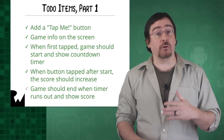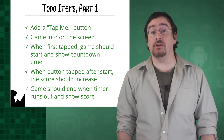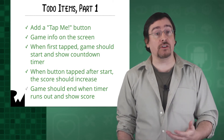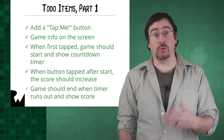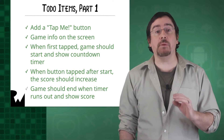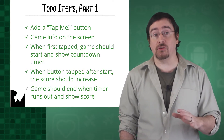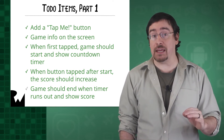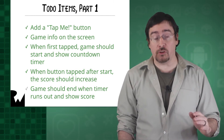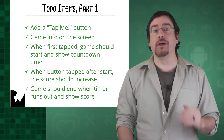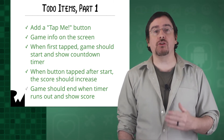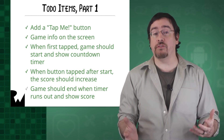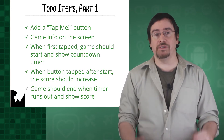In the process you've also completed the following three items from your to-do list. When the tap me button is first tapped it should start the game and count the countdown timer — you've taken care of that. When the tap me button is tapped after the game is started it should increment the score — that's taken care of as well. When the timer runs out the game should stop automatically and show the final score, which is what we've done.